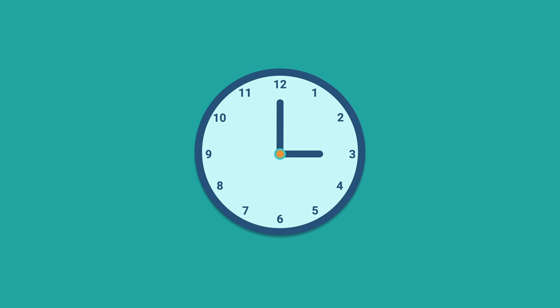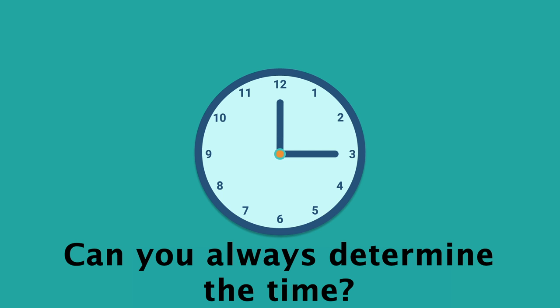But this clock has an hour and minute hand that are actually the same length and thus they look the same. So the question is, just by looking at this clock, could you always determine what time it is?